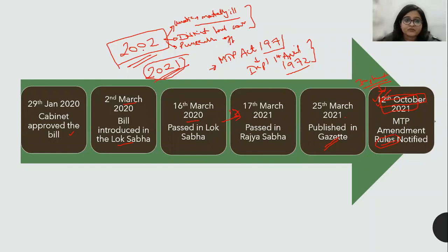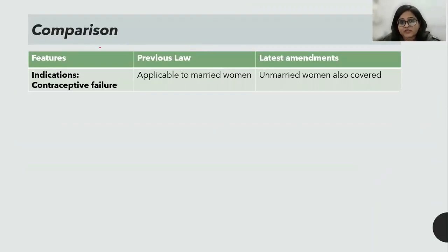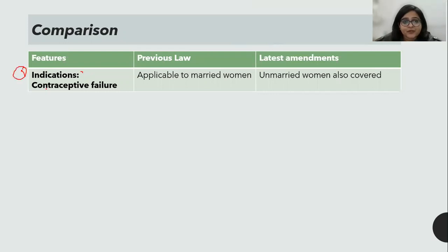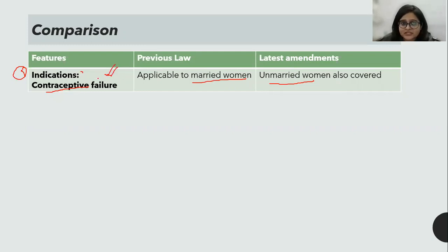The 2021 amendment has very major changes, which is why it is important. Remember: 1971, 1972, 2002, and 2021 are the important years. The first major change is that contraceptive failure as an indication was previously applicable only to married women, but now unmarried women are also covered under the latest amendment.